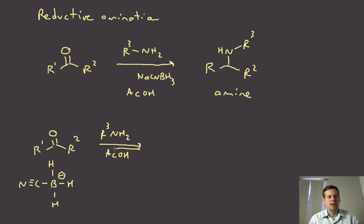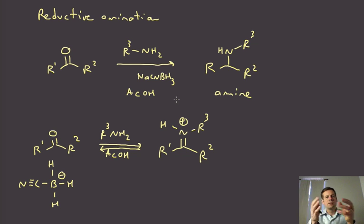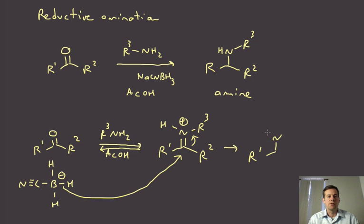And we can basically set up an equilibrium where we're generating a protonated iminium ion. So there's our protonated iminium ion. This is forming and hydrolyzing back and forth. The iminium ion actually isn't that stable, so it's forming and unforming. But only in this case, when the iminium ion is formed, is it now reactive enough for the hydride to reduce.